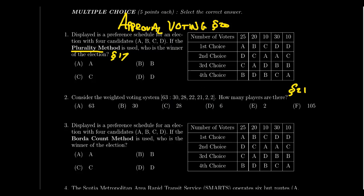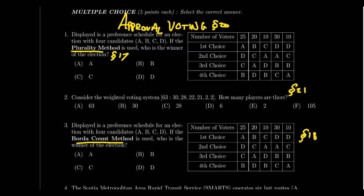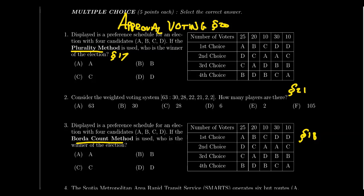Question 3 is another voting question, this time asking you to determine the winner using the Borda count, introduced in Lesson 18. You'll be given a preference schedule and need to compute who wins. I might also ask you to determine the winner using a modified Borda count, where I give you a point vector — for example, first place gets 5 points, second gets 2, third gets 1, last gets 0 — and you find who accumulates the most points.